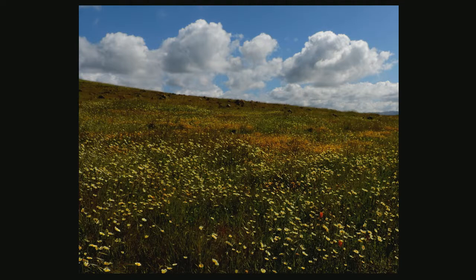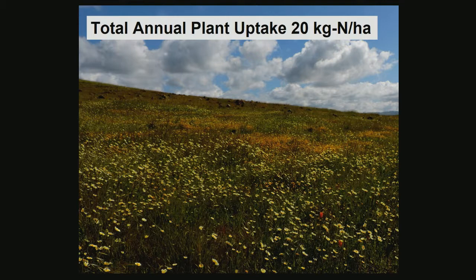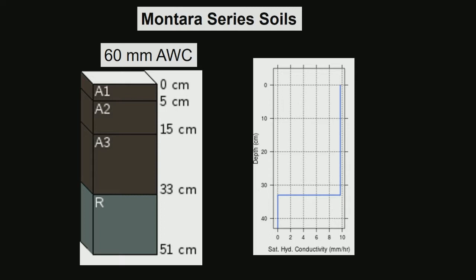This is the time of year when there's a lot of nitrate but not a lot of plant demand, because it's the very beginning of the growing season. So we're really set up for nitrate leaching here. Our total annual plant uptake is estimated at about 20 kg of nitrogen per hectare. We have deposition rates of 10 or more in some areas — a really substantial part of the nitrogen input. The soil series is about 30 cm deep with only 60 mm of available water capacity.